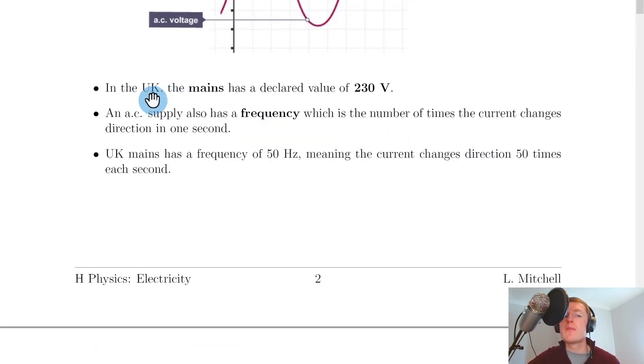And you might also remember from National 5 Physics that in the UK, the mains has a declared value of 230 volts. We'll see in another video that the declared value is also known as the RMS value, the root mean square value of the voltage.